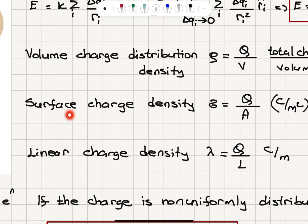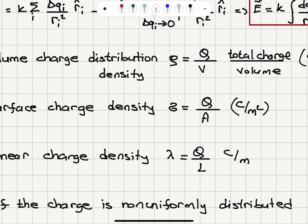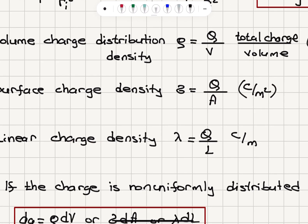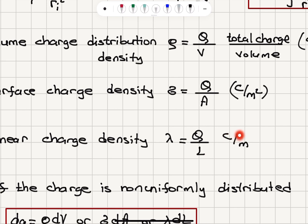Or another scenario would be a surface charge density, that is the charge is distributed uniformly over a surface area A, Q over A, Coulombs per meter square, or linear charge density, lambda Q over L, Coulombs per meter.